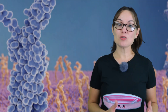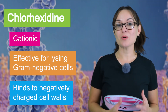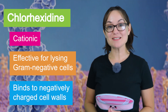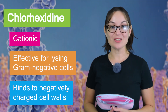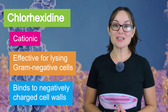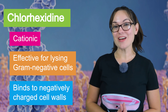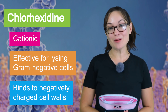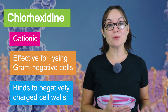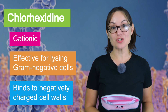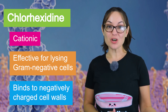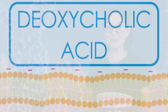Next up, we have chlorhexidine, chlorhexidine diacetate, and chlorhexidine HCl. These cationic detergents are particularly effective at lysing gram-negative bacterial cells due to their positive charge, which binds to the negatively charged bacterial cell walls.